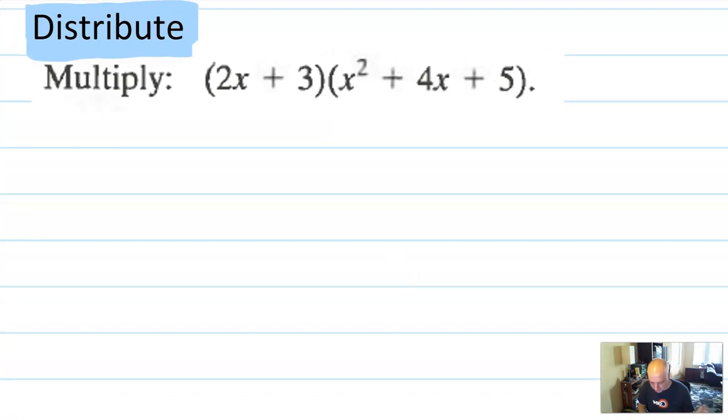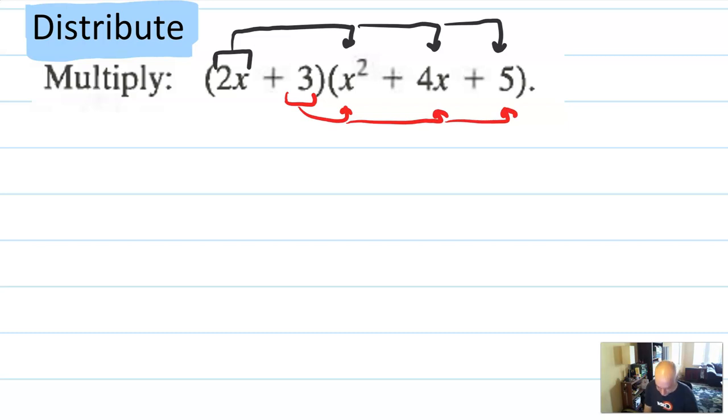But I really like showing all three because I think everyone can have, can learn at least one new thing by approaching these with different methods. So, first I'm going to multiply with the distributive property. So the distributive property says I'm going to take this 2x and distribute it to each of these three terms.